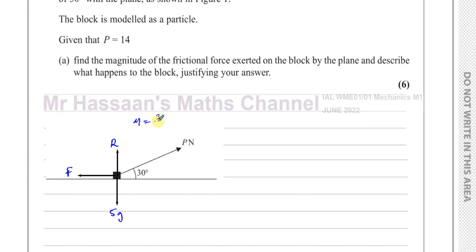The coefficient of friction is 3 over 7, given the symbol mu. The frictional force will always oppose the motion. The frictional force keeps increasing to match the force acting in the opposite direction until it reaches its maximum possible value, which we call F max. Once the frictional force reaches F max, it cannot increase any further. And if the force pulling in the other direction becomes more than F max, then the object will start moving.